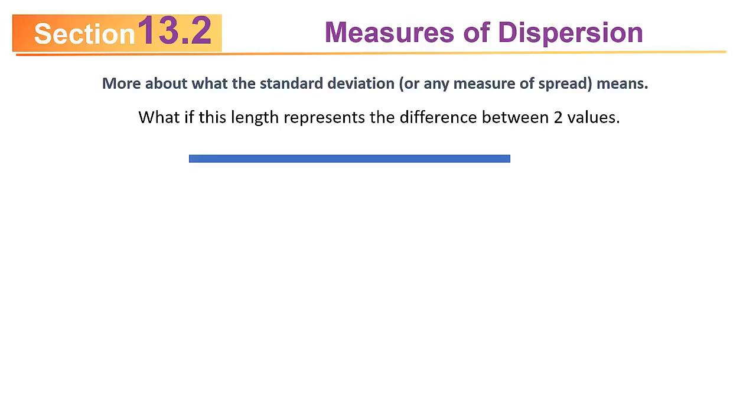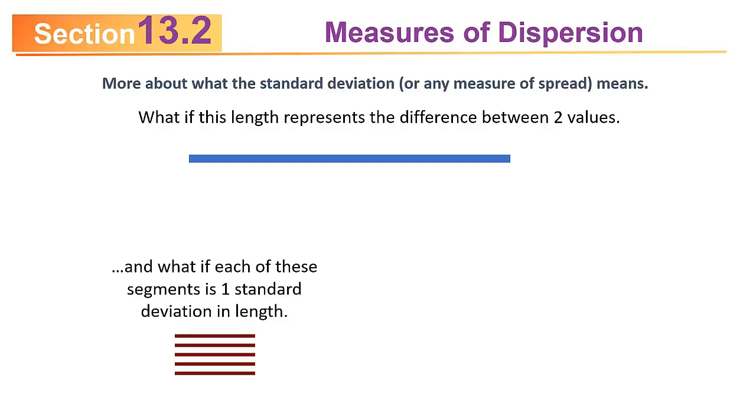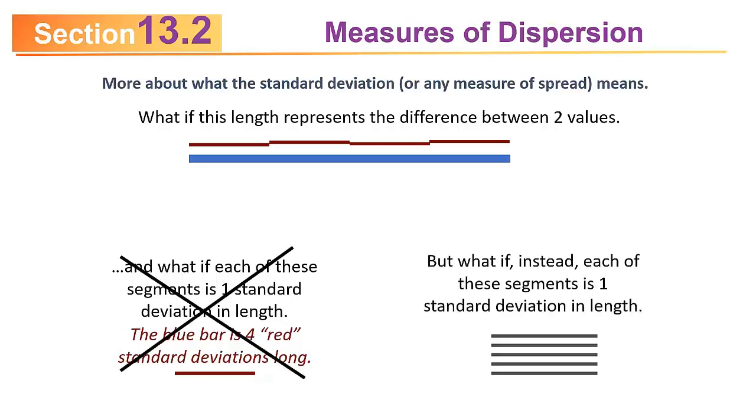Suppose the length that I put up here on the screen represents the difference between two values. What if each of the line segments I've displayed down here in the lower left quadrant is one standard deviation in length? If I take one of those things, and then another, and then another, and stretch them along the length of that wider segment, it turns out it takes four of them to equal the length of that one wider bar. So that blue bar is four standard deviations long.